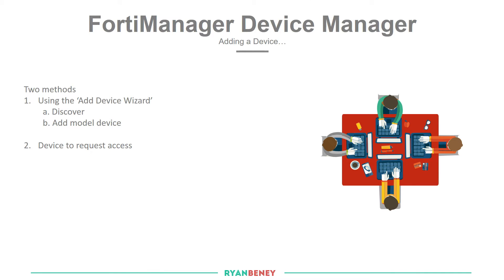There are two main methods to add devices. First, using the device wizard itself, which has two subsections: Discover, which allows you to pop in an IP address and query that device to bring back the information required to import it; and Add Model Device, which allows you to preempt adding a device that's not yet live. Second, you can get the device itself to request access to the FortiManager, and the admin can then accept or decline that request.